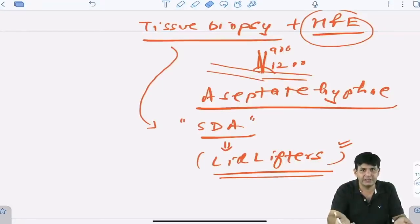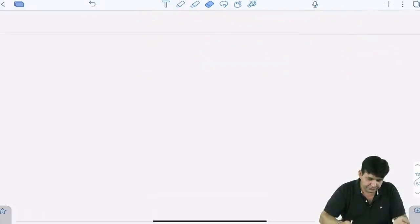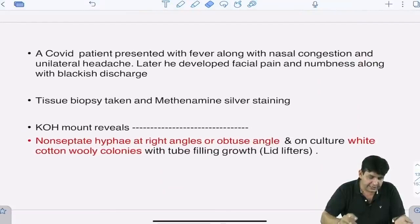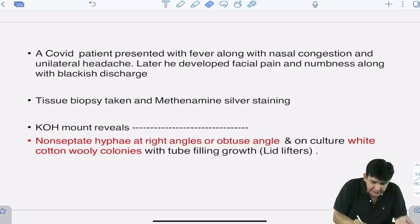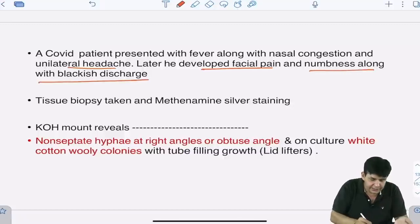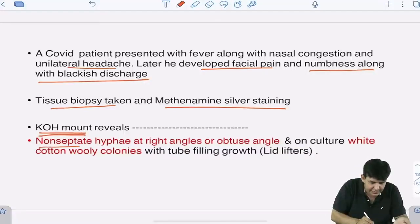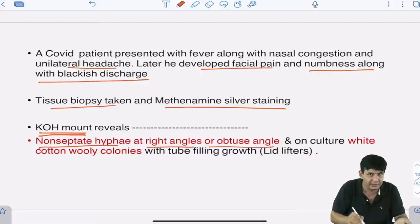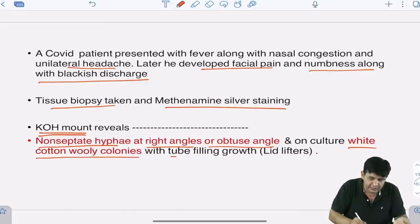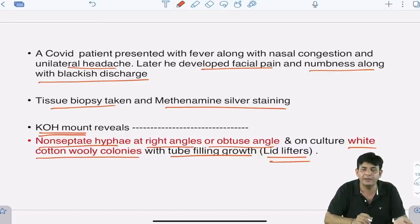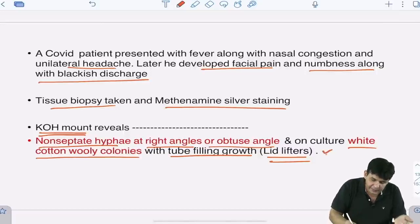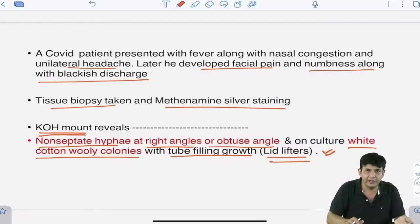The same question can come in this fashion: A COVID patient presented with fever along with nasal congestion, unilateral headache, later developed facial pain, numbness along with blackish discharge. The tissue biopsy taken shows this staining—H&E can be there, 10% KOH can be there. What is seen? Non-septate hyphae at right angles or obtuse angles. On culture, you see white cotton woolly colonies with tubes filling the growth, termed as lid lifters. This can definitely be one of the questions in your exam.